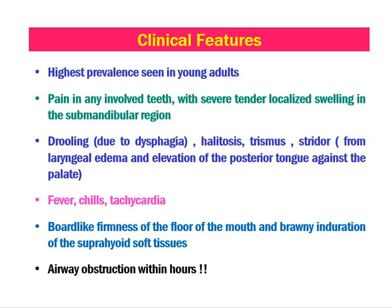There is halitosis due to infection of the floor of mouth by anaerobic organisms; pus may form in the oral cavity. Trismus occurs due to involvement of the floor of mouth muscles. Stridor results from elevation of the posterior tongue against the palate — as seen in the previous picture, the tongue is pushed posteriorly. The patient may be toxic, with fever, chills, and tachycardia due to toxicity and dehydration. On palpation there will be board-like firmness of the floor of mouth and brawny induration of the suprahyoid tissues because of cellulitis and pus formation.